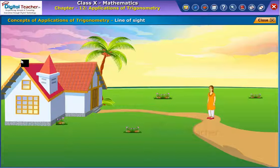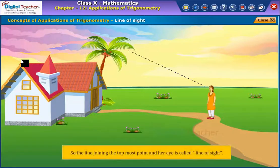One day Vijaya got an idea to find the height of a palm tree which is in the backyard of her home. She tried to locate the topmost point of the tree. So the line joining the topmost point and her eye is called line of sight.